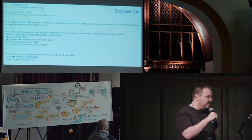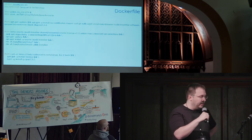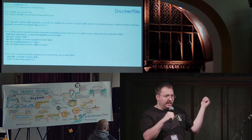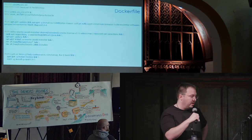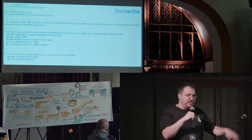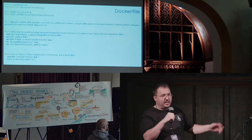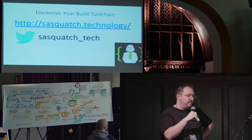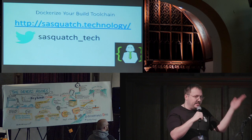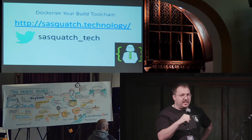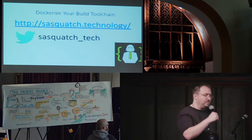This is the final slide — what a Dockerfile would look like. If you look through the slides, there's a link to a repo that has all these files so you can try this out for yourself. This would be a Dockerfile for a project with Maven and NPM. Finally, Sasquatch Technology is who I'm here for. Thanks for your time.